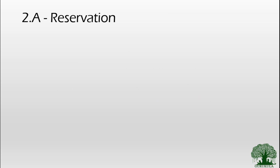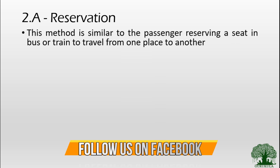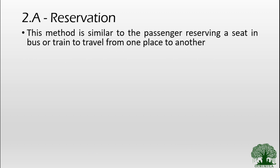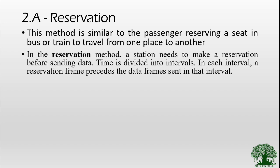First of all we will talk about what reservation is. As the word depicts, we will be making reservations. To better understand this access mechanism we can correlate it with a passenger reserving a seat on a bus or train to travel from one place to another. Similarly, when we want to travel from one place to another we reserve seats on a flight, train, or bus. The same principle applies here for a station that wants to transmit a frame. In the reservation method, a station needs to make a reservation before sending any data.